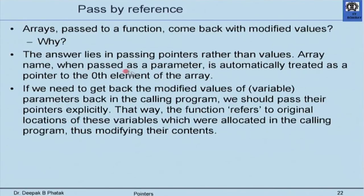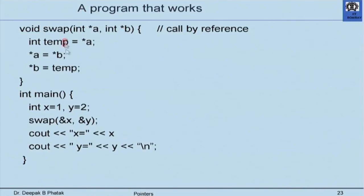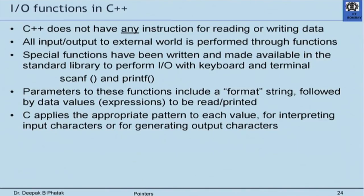Array names are always passed as addresses or pointers. Whenever an array name is passed as a parameter, C++ automatically treats it as a pointer to the zeroth element of the array. That is why when an array is passed to a function and an element is modified inside the function, that change is reflected in the calling program — because what was passed is not a copy but a pointer to the array. Here is the swap function example: swap(int* a, int* b) — when a and b are exchanged, the change reflects back onto x and y in the calling program.